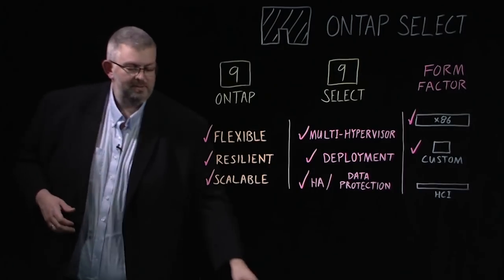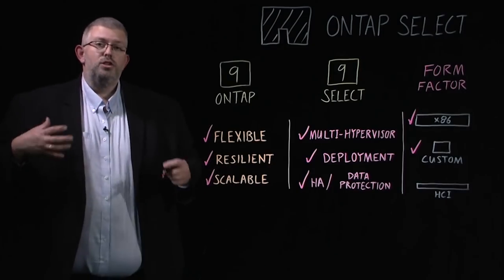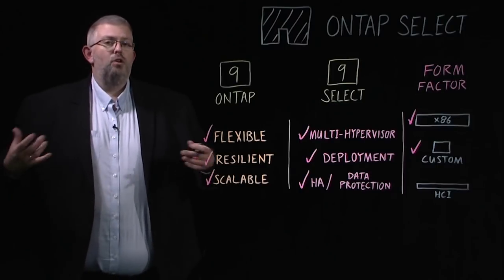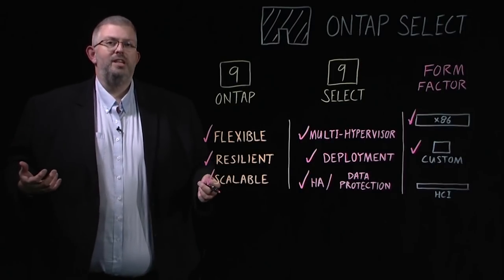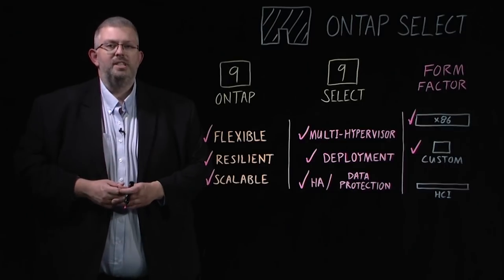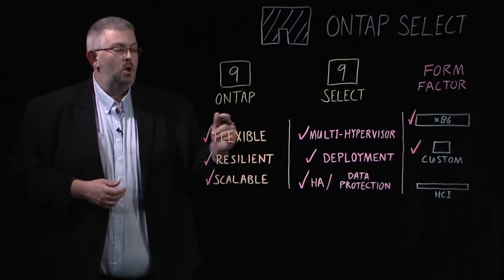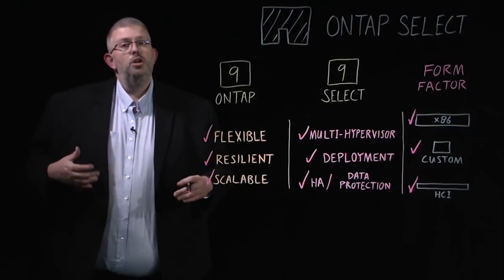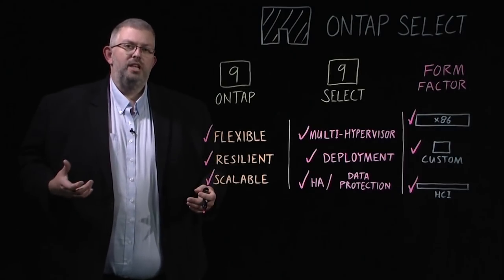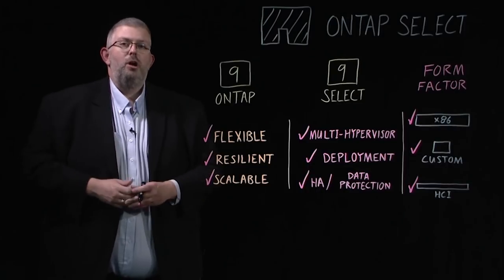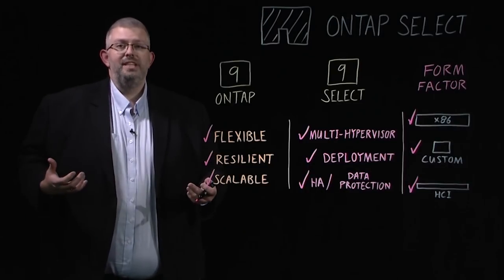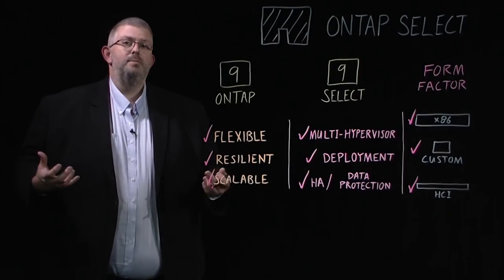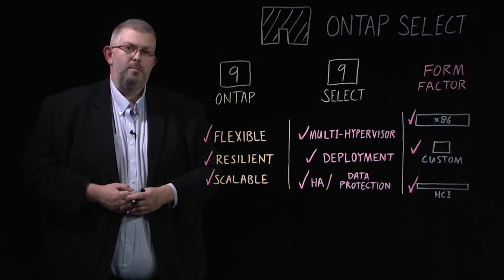ONTAP Select really started out with direct attached storage, but it's grown beyond that. So you can run on top of shared storage if you have a third-party SAN — just deploy ONTAP Select on top of it using your hypervisor. Or, even newer, deploy on HCI — that could be the new next-generation NetApp HCI systems, or even third-party HCI systems like VMware's vSAN, where you might deploy vSAN for your SAN applications and put ONTAP Select as a vNAS on top of it.